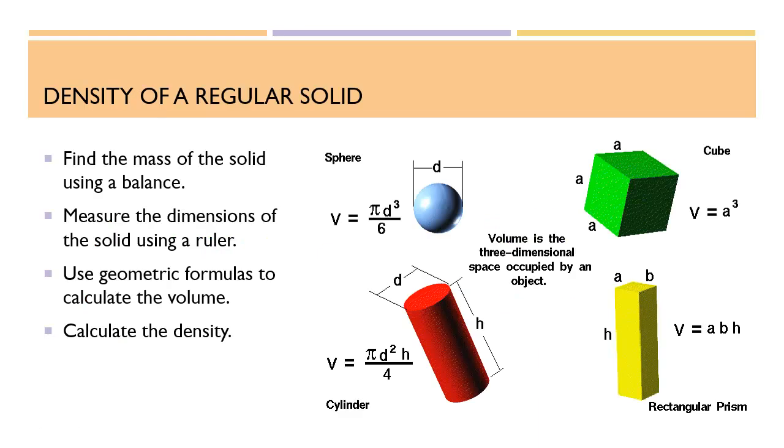Now for finding the density of a regular solid, you want to find the mass of the solid using a balance, measure the dimensions using a ruler, and then use geometry to find the volume. Then use the equation to calculate the density, which would be in grams per cubic centimeter.